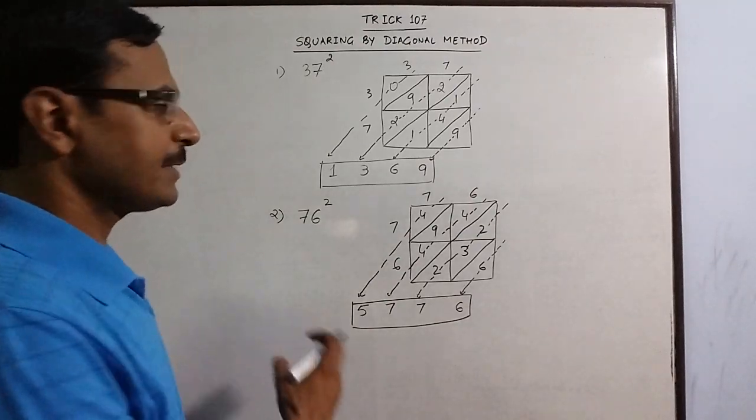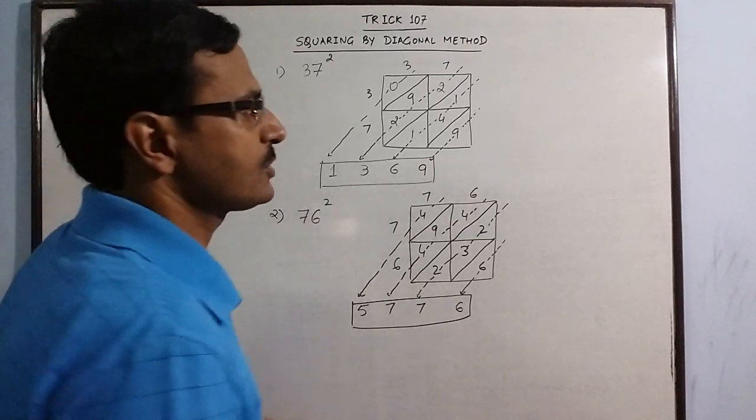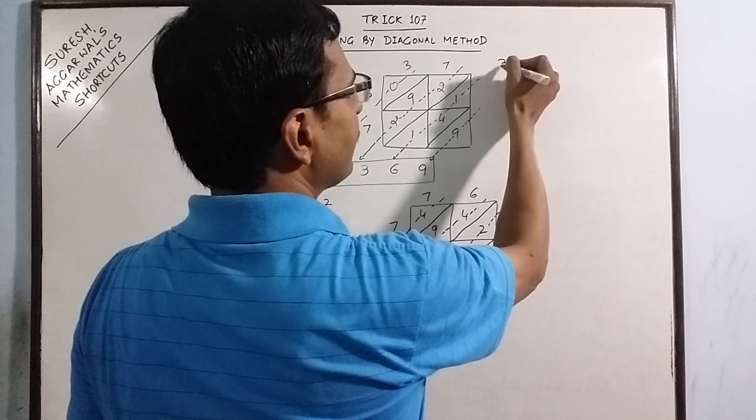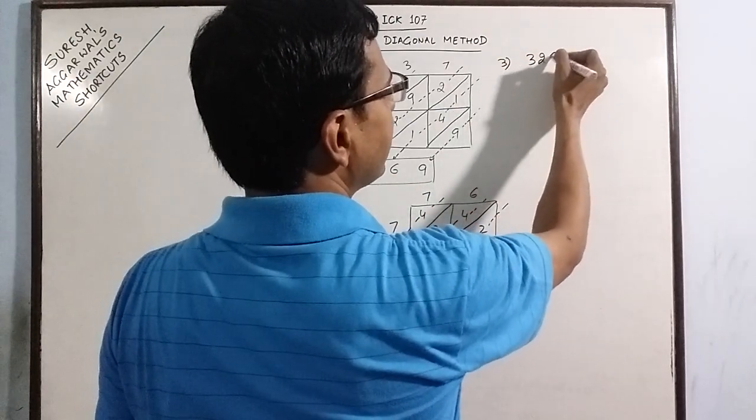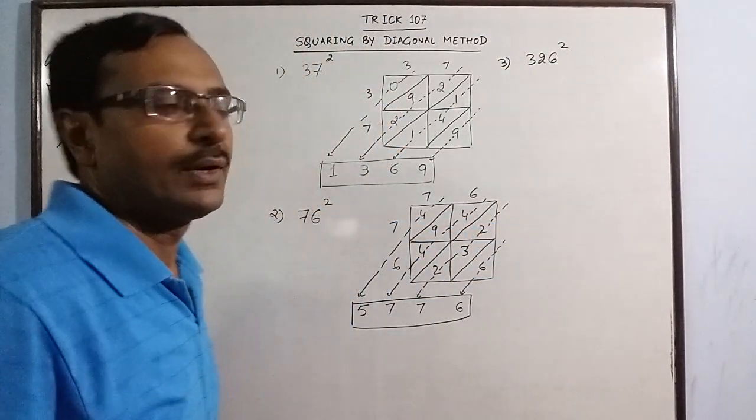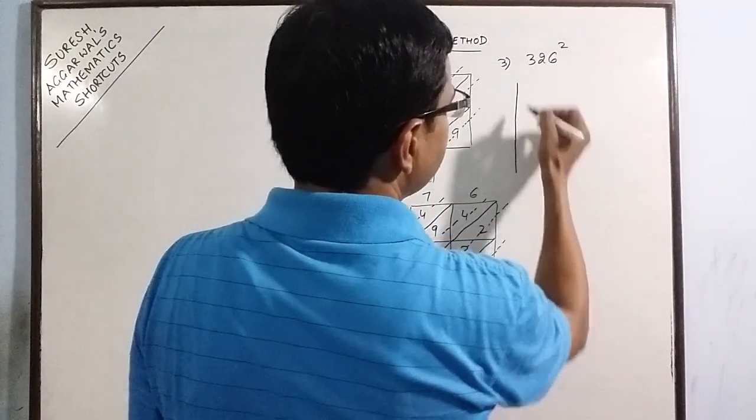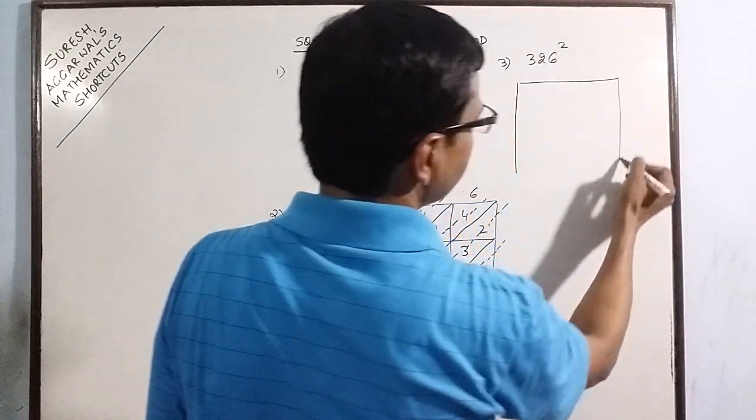Likewise, you can extrapolate this method to find the square of 3 digit numbers also. So I will demonstrate one example of a 3 digit number. Say we have 326 square. Now for this you will need to have a 3 by 3 matrix. Since it is a 3 digit number.